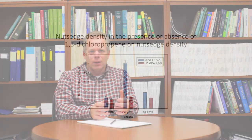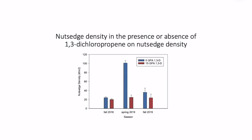The first graph shows fall 2018, spring 2019, and fall 2019, looking at nutsedge density in number per square meter. In every season, you tended to have more nutsedge where Telone was not applied. It was only significant in spring 2019, where you can see the blue bar — representing no Telone — is significantly higher than the red bars representing 15 gallons per acre of Telone.